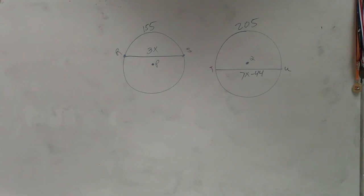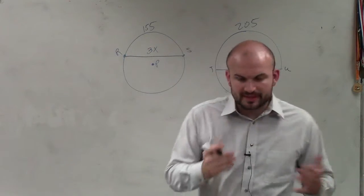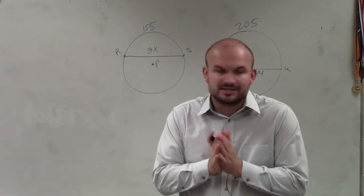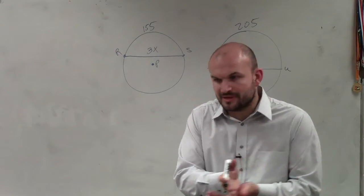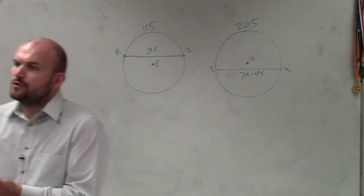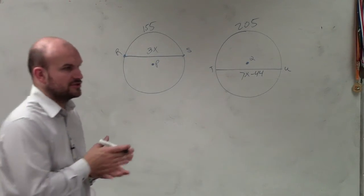So when looking at this problem, we have an issue. Because what we have talked about so far in this class is when you have chords that are equal in measurement, then the arc measures are equal. Or if we have arcs that are equal in measurement, then the chords are equal in measurement.